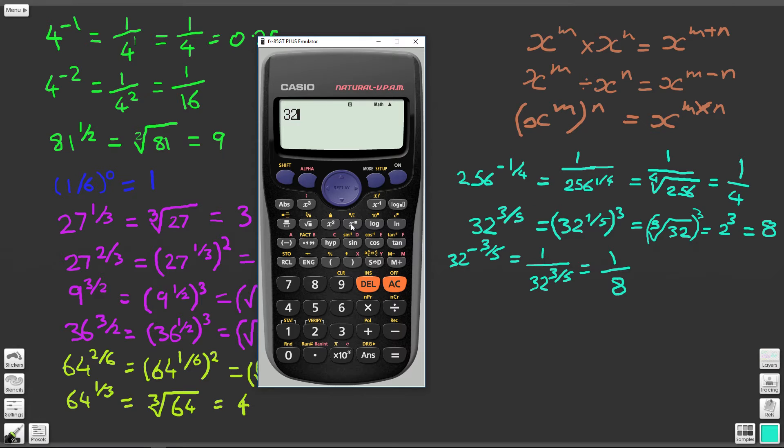32 to the power of 3 over 5. We should get 8. There it is. And finally 32 to the power of negative 3 over 5. We should get 1 over 8. There it is, an eighth.